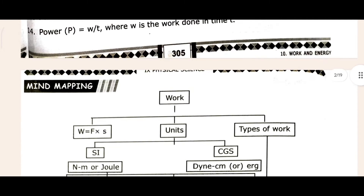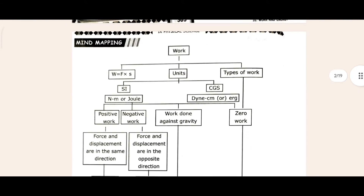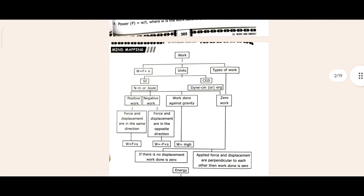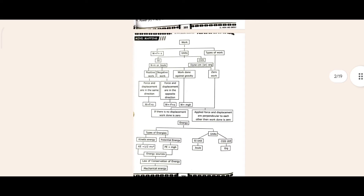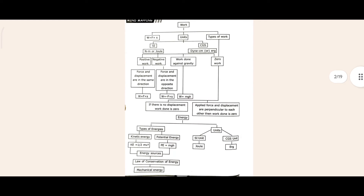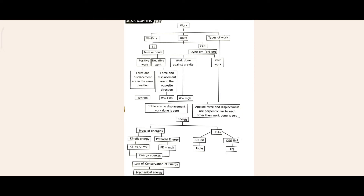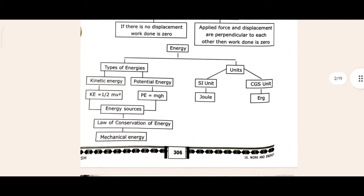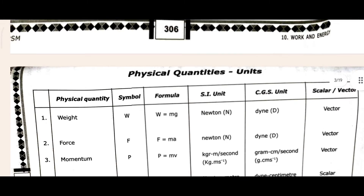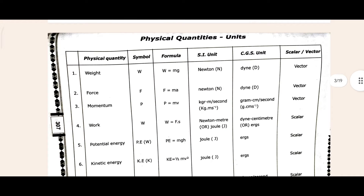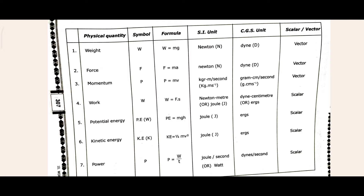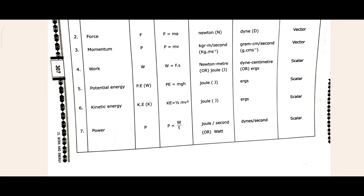I hope that is clear. Come to the mind mapping — mind mapping is very important because you will get an idea of what we are going to learn in this chapter. I'm just showing you here. If you want to write you can, otherwise just leave it. Next, the physical quantities and units — this is very important. Weight is denoted by W, formula W equals mg, unit is Newton, and it is a vector quantity.